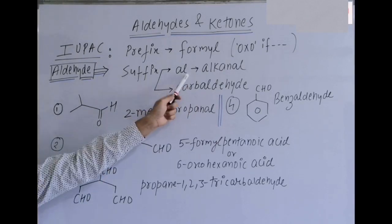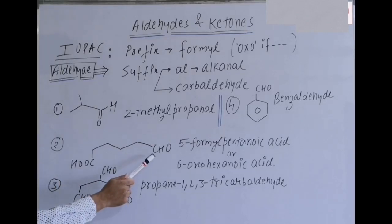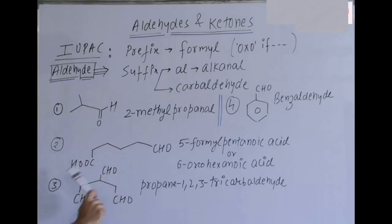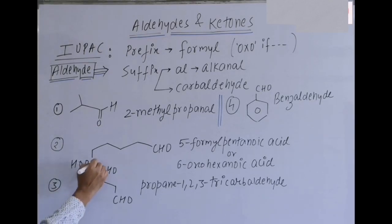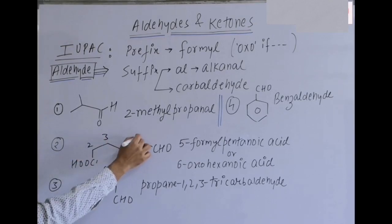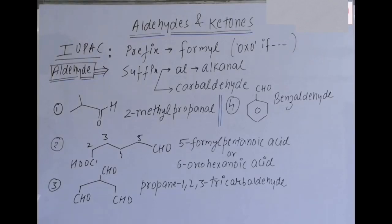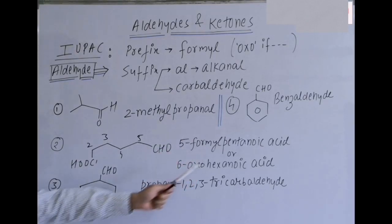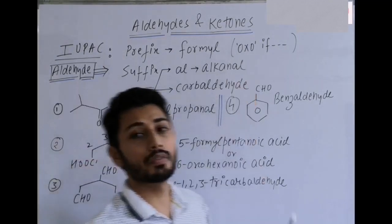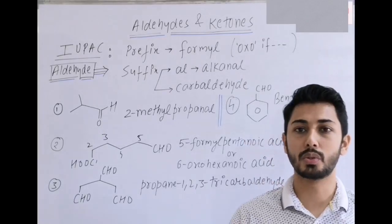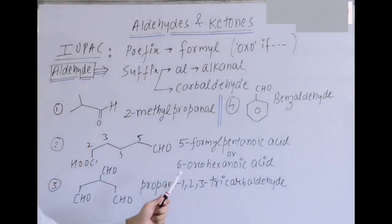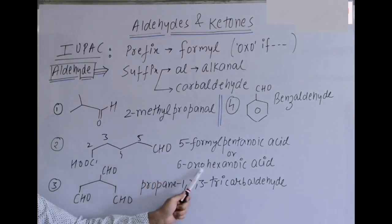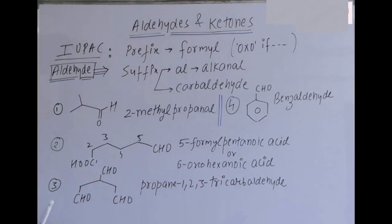In the second example there are two functional groups — CHO and carboxylic acid. The seniority order of carboxylic acid is higher, so numbering starts from the carboxylic carbon: 1, 2, 3, 4, 5. Two cases arise: first, the substituent with aldehyde at position five gives '5-formylpentanoic acid'; second, if the CHO carbon is counted, we use the prefix 'oxo', giving '6-oxohexanoic acid'.